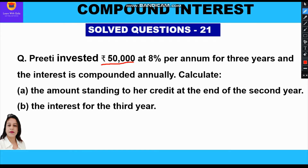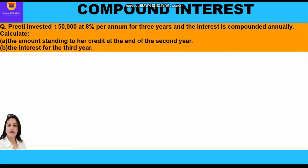Priti has invested rupees 50,000, so that is our principal. Rate of interest is 8% per annum. Total time period for which she has invested is three years. We need to calculate the amount at the end of the second year and also the interest only for the third year.